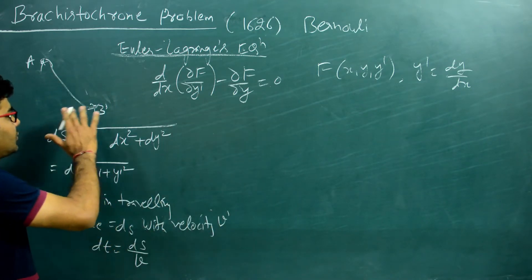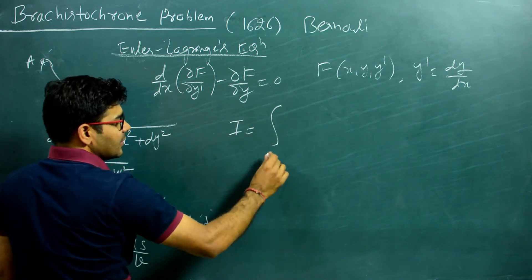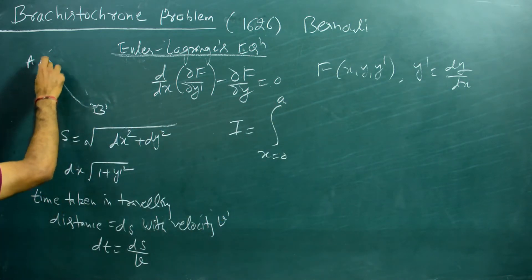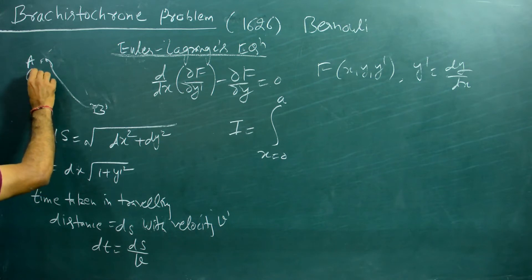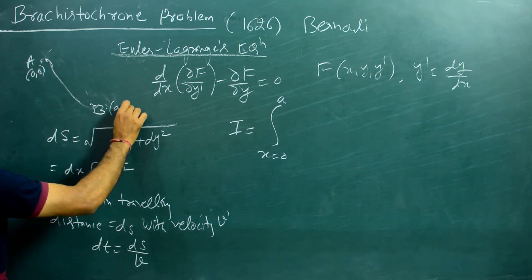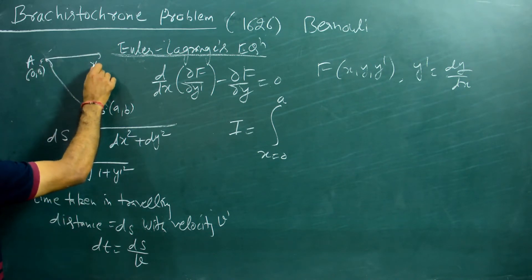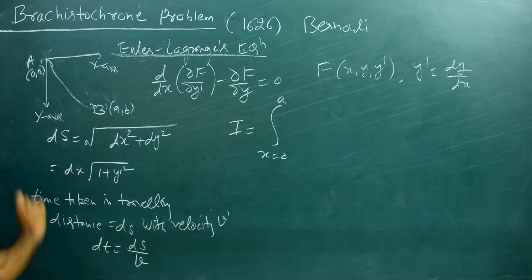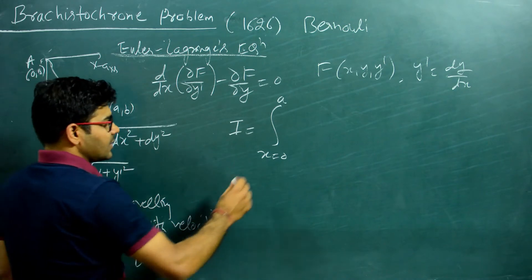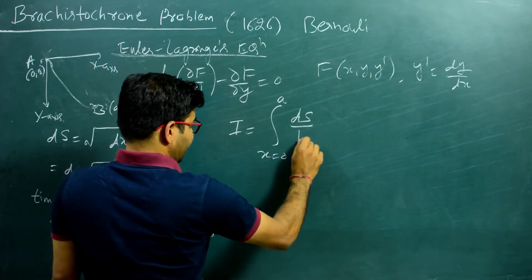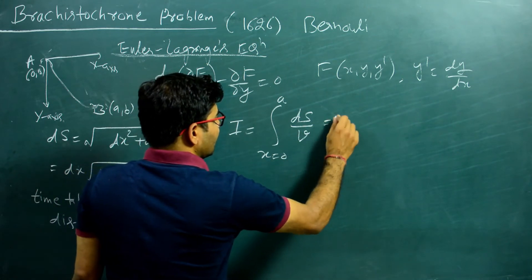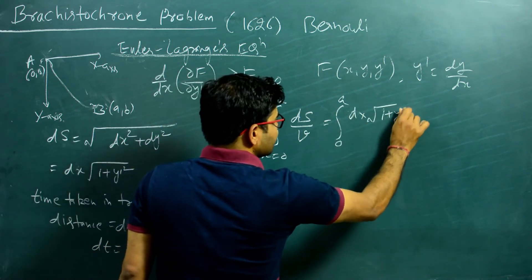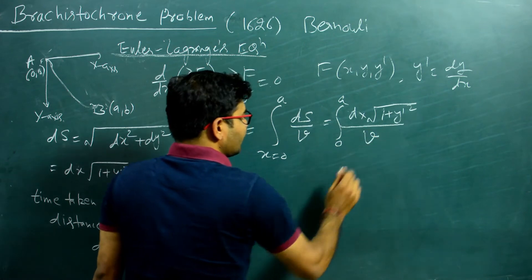To solve this problem we have to extremize the integral. If I take the position of particle at point A as origin (0, 0) and point B at coordinates (a, b), with x along the horizontal axis and y along the vertical axis, the integral we have to extremize becomes: I = ∫₀ᵃ √(1 + y'²) / V dx.